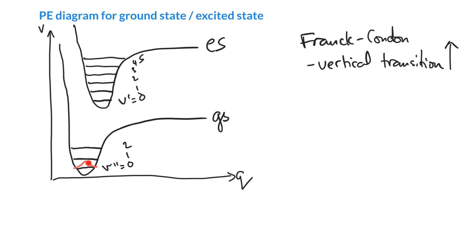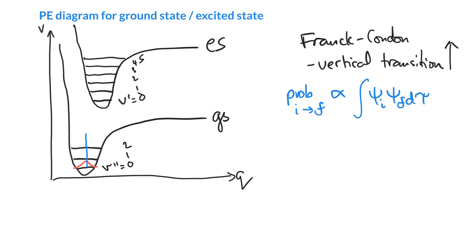The vibrational wave functions come from solving the Schrödinger equation, and the square of the wave function tells us the probability. The wave function for V double prime equals zero is peaked in the center, so the highest probability location is in the center. The probability of a transition between two states is directly proportional to the square of the overlap of their wave functions — the initial vibrational wave function times the final vibrational wave function, all squared.